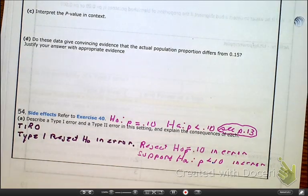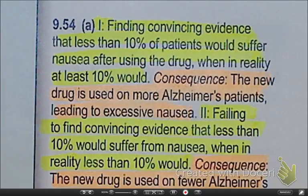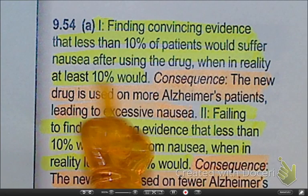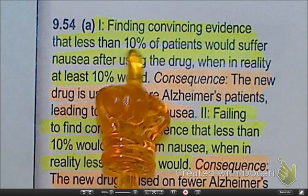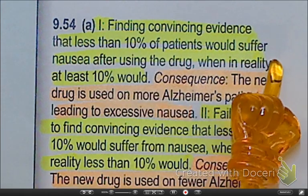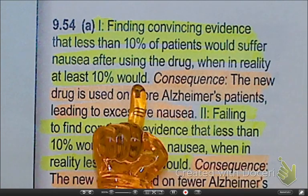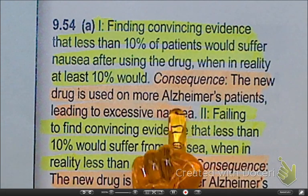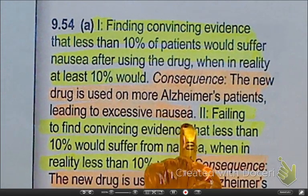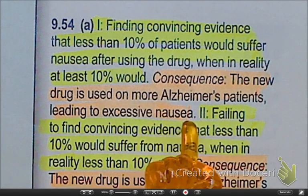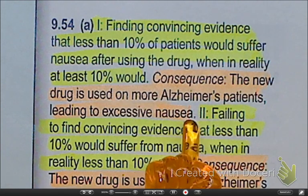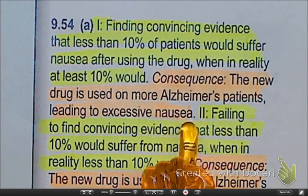Referring to the book: we're finding convincing evidence that less than 10% will suffer nausea, when the reality — which is false — is that at least 10% would. The consequence of our type 1 error is that the new drug we used is going to cause more nausea than stated. That's no good — that's the consequence of our type 1 error.